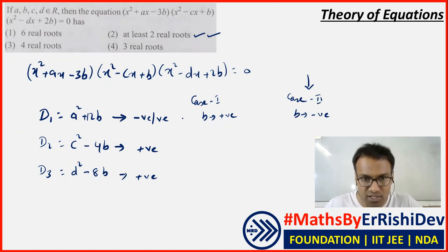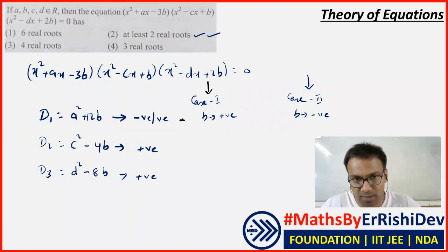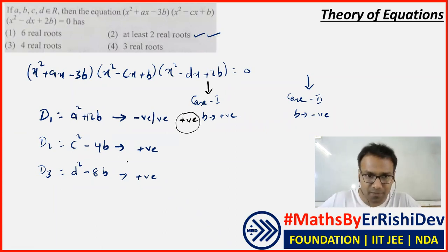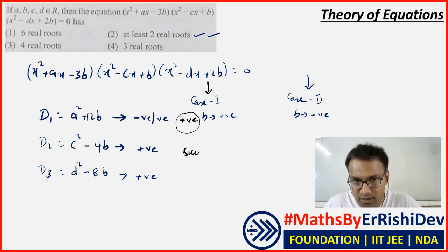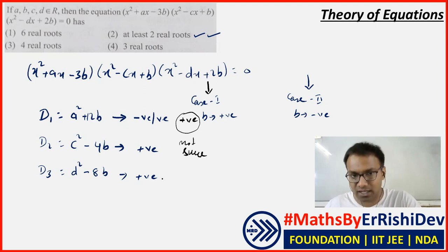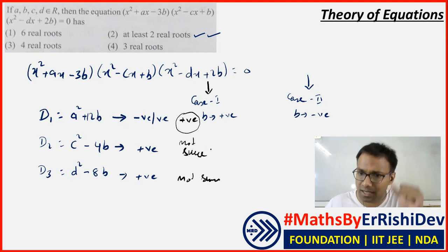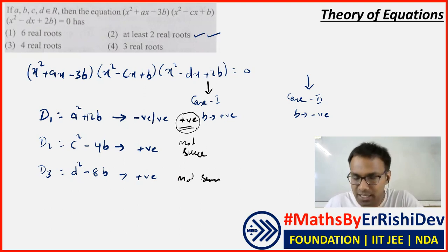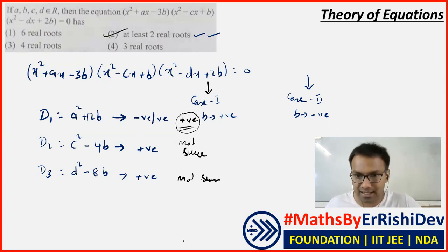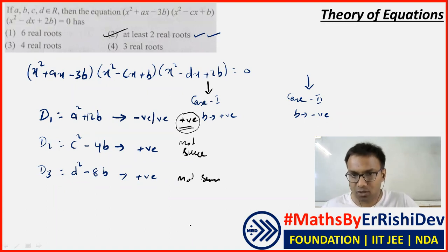Now when B is positive: A² + 12B is positive, since both A² and 12B are positive, so D1 is definitely positive giving real roots. But D2 and D3 are uncertain when B is positive, as c² - 4b and d² - 8b depend on numerical values. So in both cases — whether B is positive or negative — either D1 is positive, or D2 and D3 are both positive. Therefore we are sure of at least two real roots. That is the conceptual clarity behind this question, though you could also reach this answer purely by logical elimination from the options.